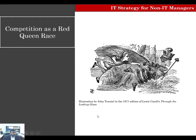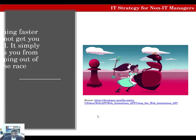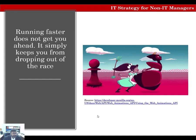Let's start this lecture by thinking of competition as a Red Queen race. In the book Through the Looking Glass, Lewis Carroll writes about the Red Queen. When Alice asks her why she's running so fast, the Red Queen tells Alice: it takes all the running to keep in the same place. To get somewhere, you must run twice as fast. Using running as an analogy for IT investments, investing the same as your competitors doesn't really get you ahead — it keeps you from dropping out of the race.